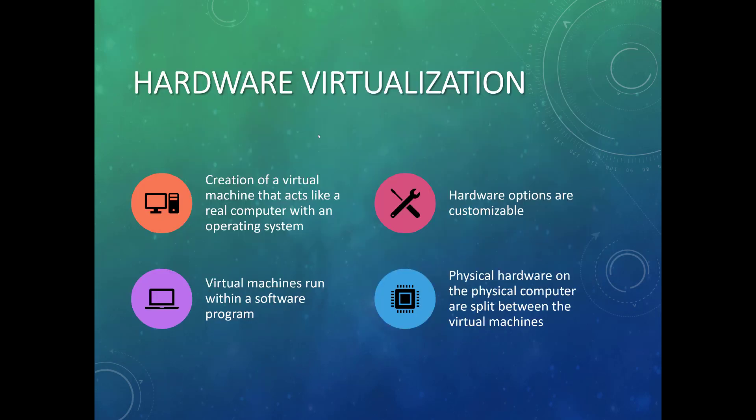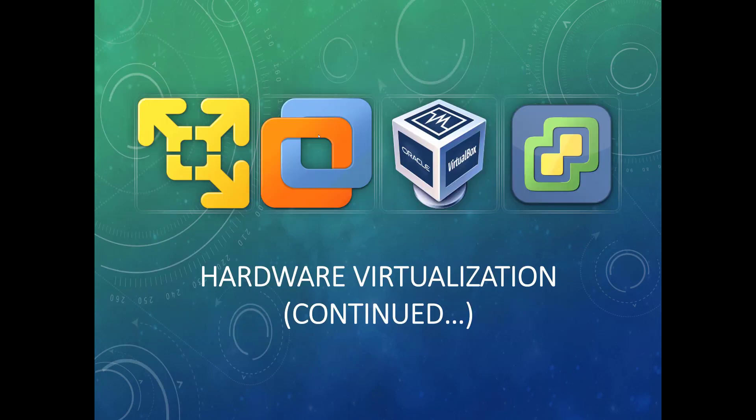Hardware virtualization is the creation of virtual machines that act like a real computer. It's probably the most common type. Hardware options are customizable — you can give one virtual machine 2 gigs of RAM and another 10 gigs. Common hardware virtualization programs include VMware Workstation, Oracle VirtualBox, and vSphere. We use these as a sandbox environment when teaching students operating systems so they don't need a new physical computer just to learn Linux or Windows.